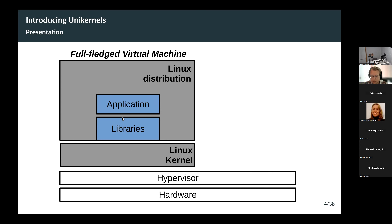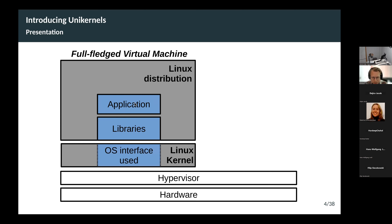Apache has a bunch of dependencies — something like LibSSL to do encryption, maybe Perl or things like that. So you have a bunch of dependencies for the application. At runtime, Apache is going to make use of a subset of the services provided by the Linux kernel to do things like networking.